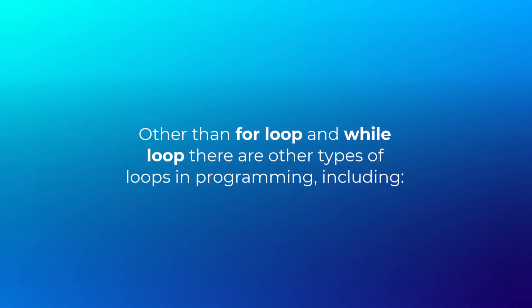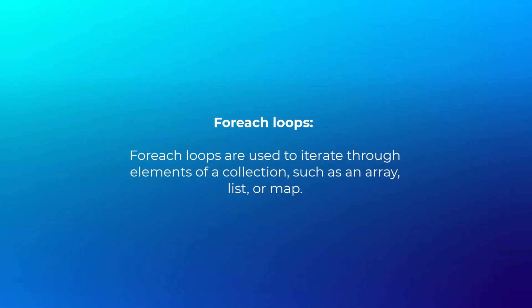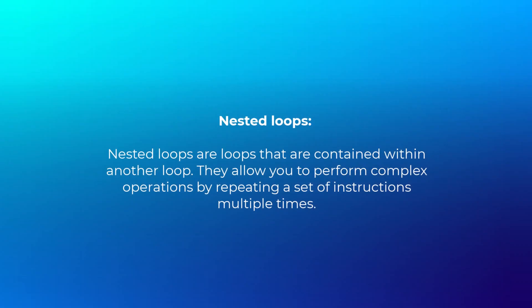Other than for loops and while loops, there are other types of loops in programming, including: do-while loops, which are similar to while loops except that they always execute the body of the loop at least once; for-each loops, which are used to iterate through elements of a collection such as an array, list, or map; and nested loops, which are loops contained within another loop that allow you to perform complex operations by repeating a set of instructions multiple times.